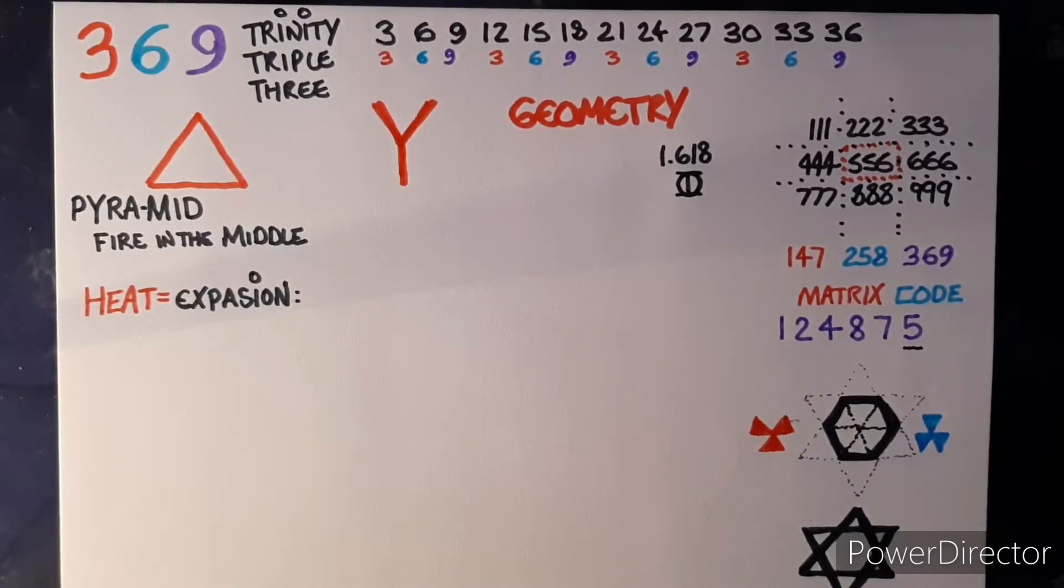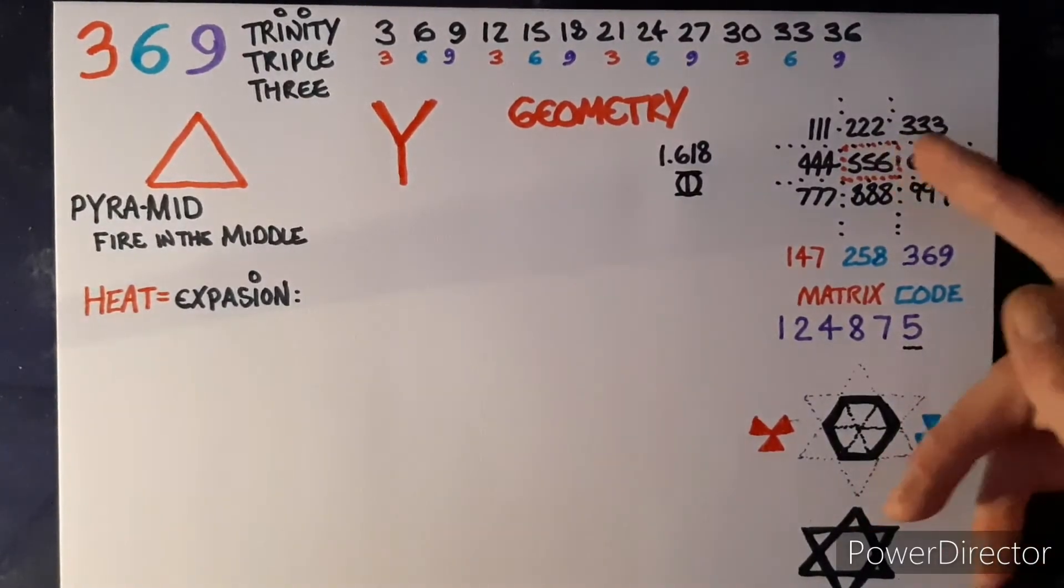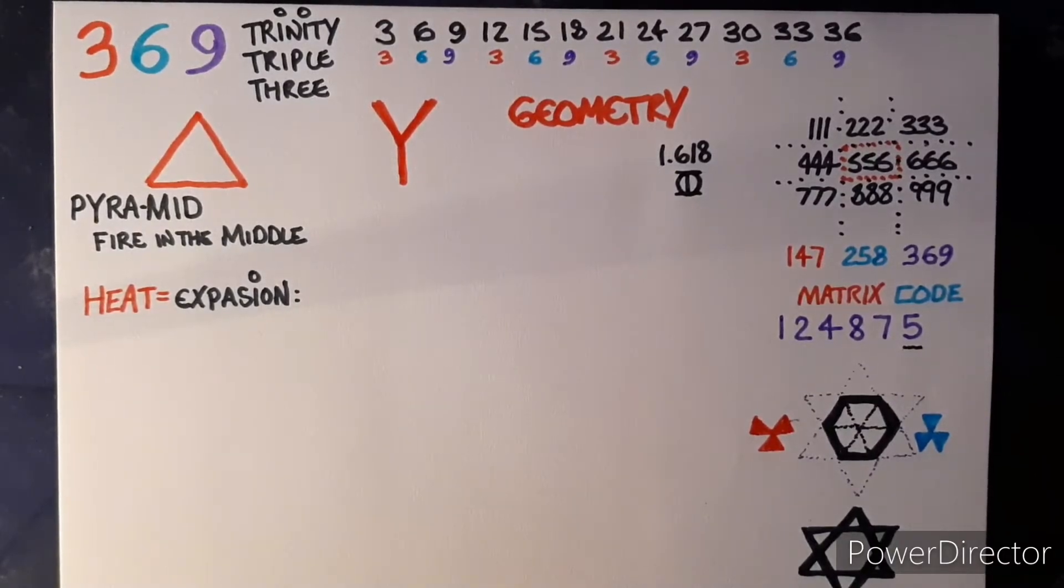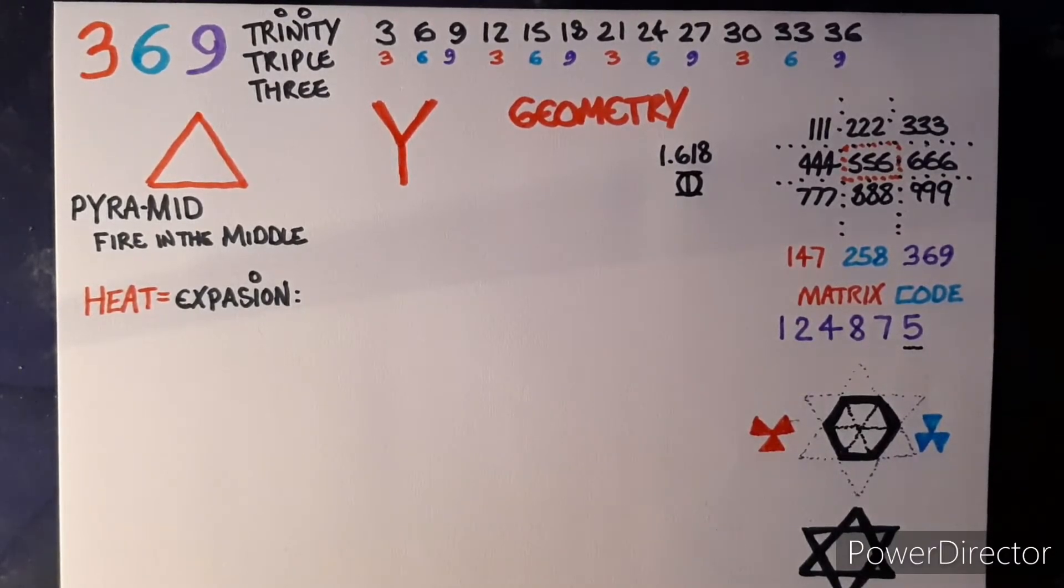If you look at numbers in a grid like this, you'll see the triple number system there, and it reveals the codes. The number three code starts as one four seven. There's six codes, but that's how it starts. Then you've got the two five and eight, that's the code for the number six. And then you have the three six and nine.